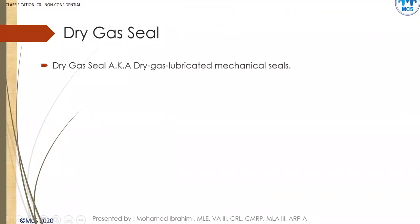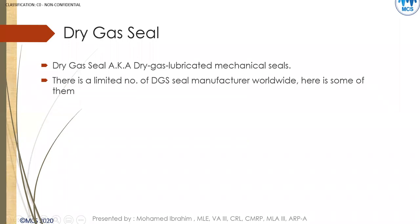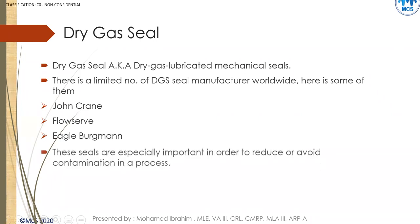The dry gas seal — some call it a dry gas lubricated mechanical seal, because the film between the face and seat is gas rather than fluid. The famous manufacturers for the dry gas seal include John Crane, FlowServe, and Eagle Bergman. There may be one or two other companies available in the market as well.